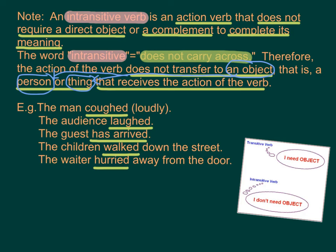Note: An intransitive verb is an action verb that does not require a direct object or a complement to complete its meaning. The prefix 'in' in intransitive means 'does not carry a course.' Therefore, the action of the verb does not transfer to an object — there is no person or thing that receives the action of the verb.